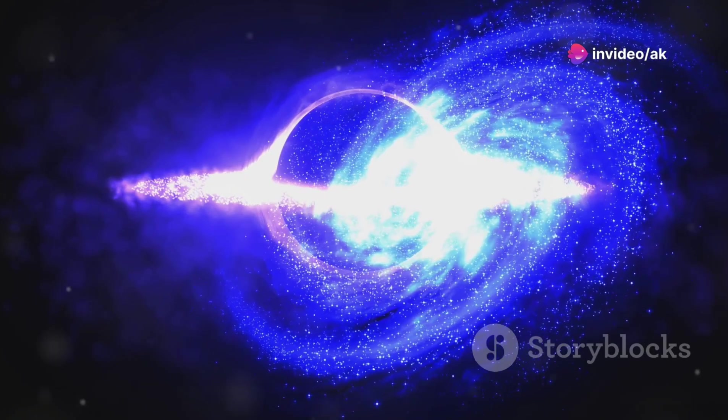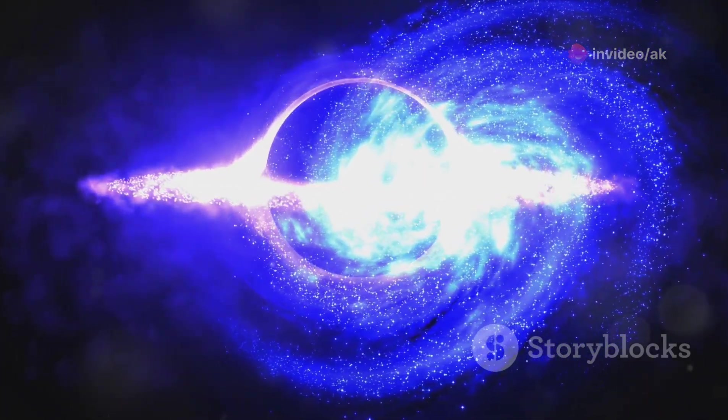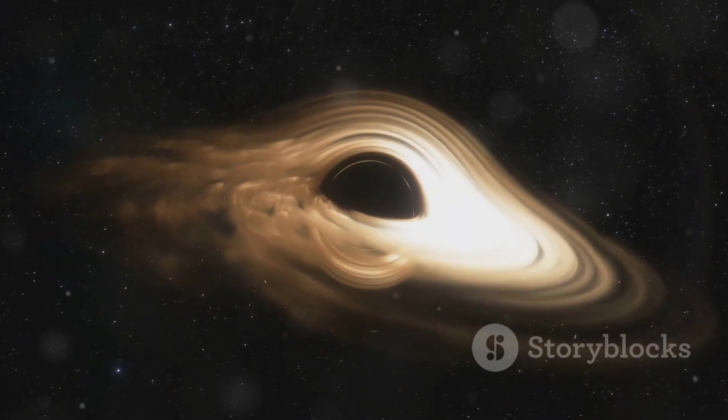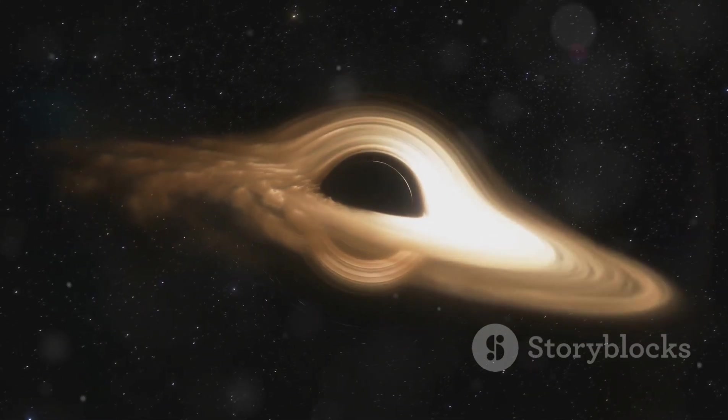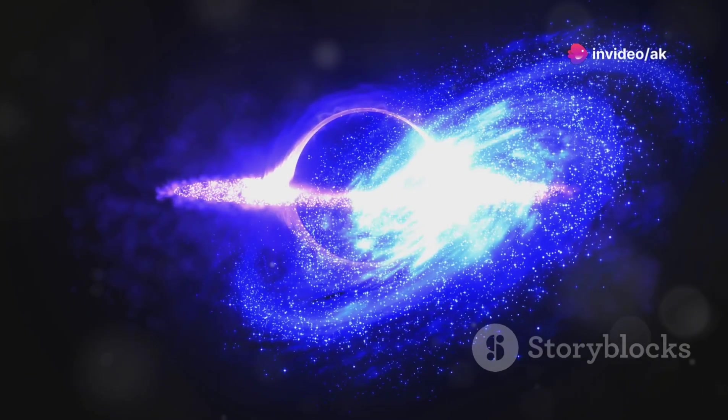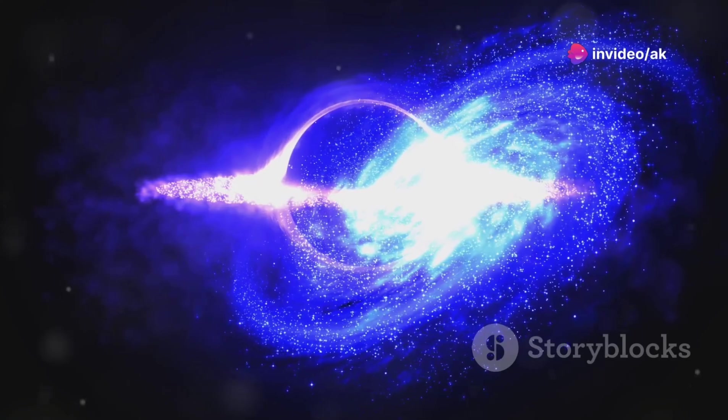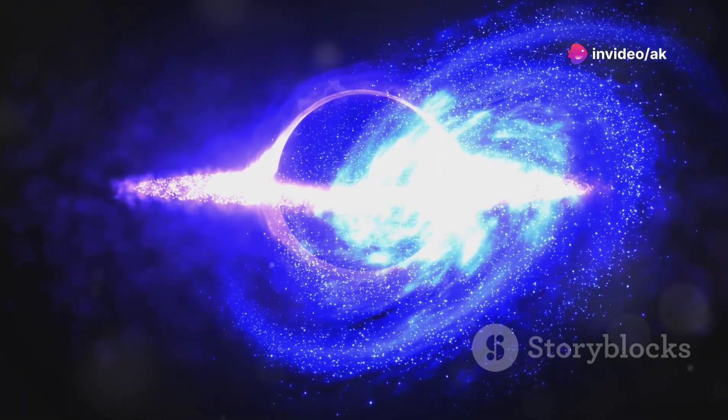The space around a black hole is a chaotic and violent place. Stars are ripped apart, their gas spiraling inwards to form a swirling accretion disk. This disk is heated to millions of degrees, releasing intense X-rays and gamma rays.